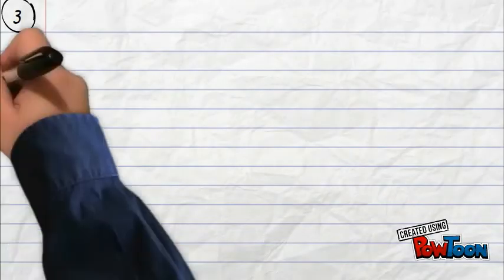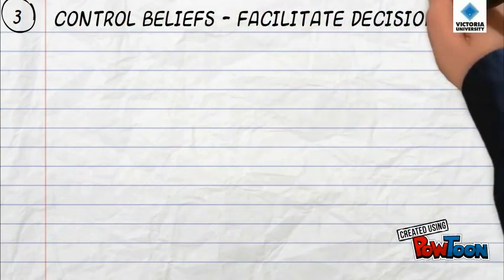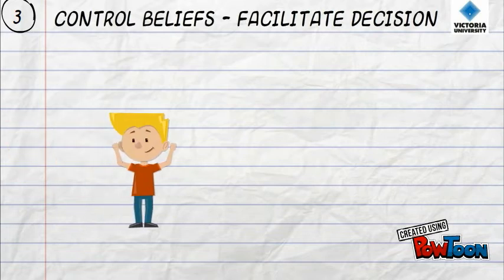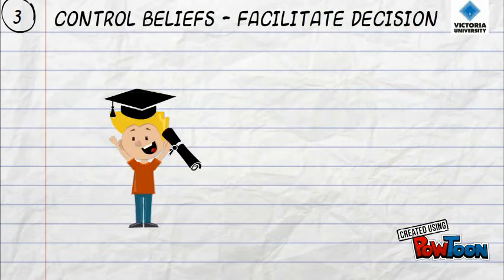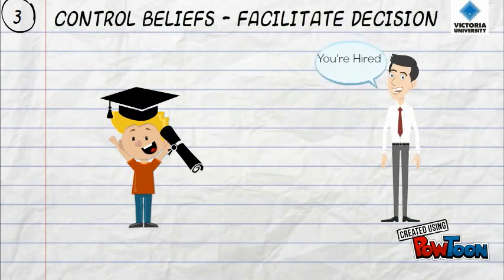Now we will look at factors that may facilitate performance of behaviour. An example would be that a student knows if he puts in the hard work now he will eventually get his degree and hopefully get closer to obtaining their dream job.